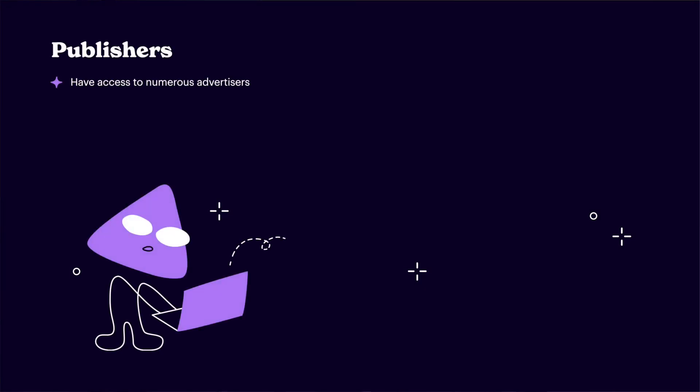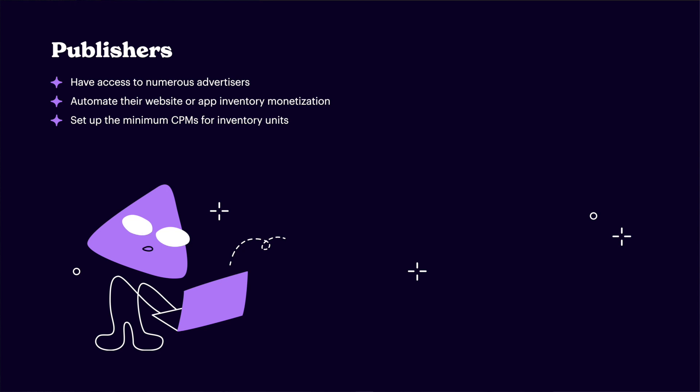Let's start with publishers. Selling inventory through an ad exchange helps them have access to numerous advertisers without significant effort, automate their website or app inventory monetization, set minimum CPMs for inventory units, and block ads that contain sensitive information or inappropriate content.